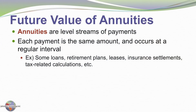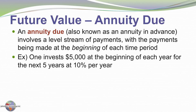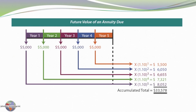Turning our attention to annuities — annuities are level streams of payments where each payment is the same and occurs on a regular interval. Examples include some retirement or investment accounts, leases, insurance settlements, and tax-related calculations. An annuity due, also known as an annuity in advance, is one where the payments are made at the beginning of each period. For example, if one invests $5,000 at the beginning of each year for the next five years at 10%, this graphic shows clearly how the future value grows.